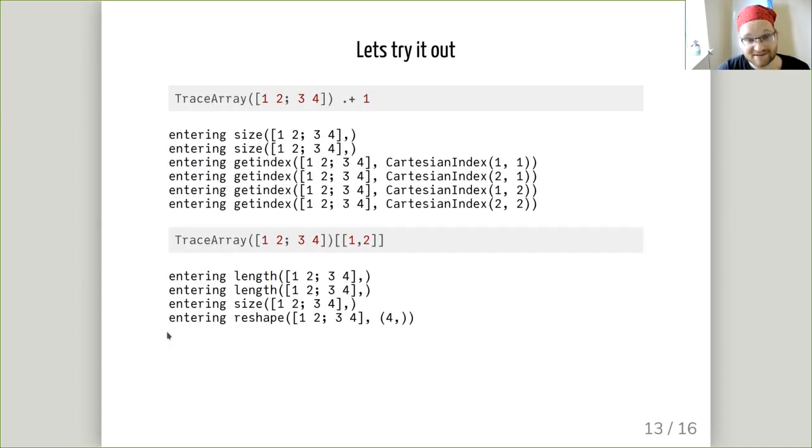We can see that having done this, this all works. Here I'm calling a broadcasted add and we can see that the things that were called on the trace array were size and getindex. Similarly, you can see me doing an array slice and it's calling length a few times, size and then reshape.